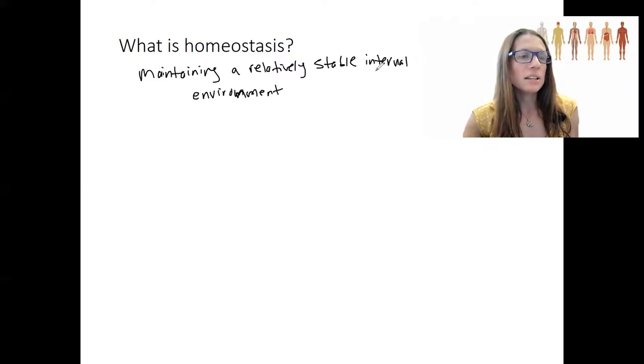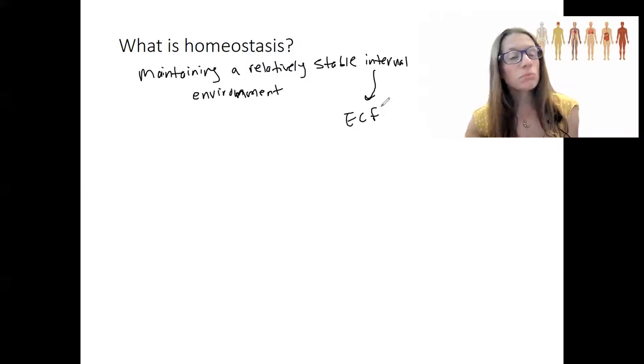Typically, inside our bodies is going to be things in the extracellular fluid, a lot of things in the blood, blood sugar, for example. So, these things I'm talking about are variables in the environment that are maintained, like blood glucose.